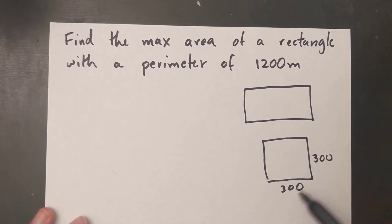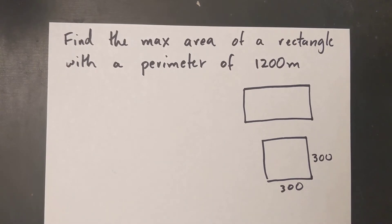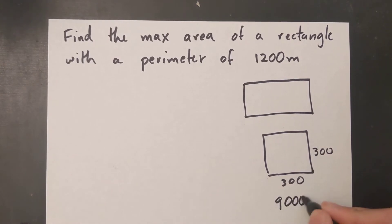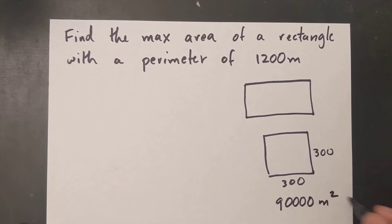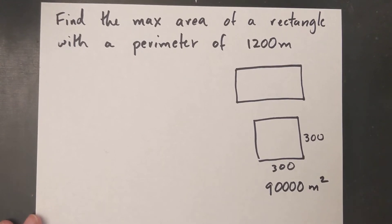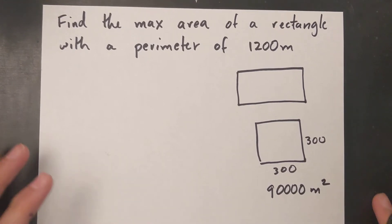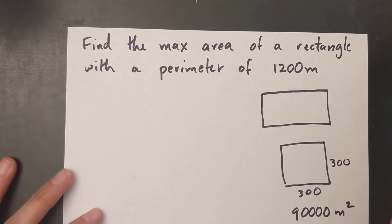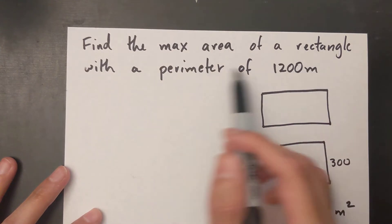If I want to find the area I'd multiply the two three hundreds, so my max area would be 90,000 meters squared. But if you put this solution on a test you wouldn't get any marks because you haven't proven it algebraically. So I'm going to show how to prove it algebraically in this question.